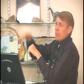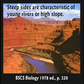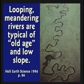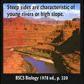Steep sides indicate the river is probably very young or on high sloping ground. Characteristics of a low-gradient stream: it loops back and forth. Characteristics of a high-gradient stream: steep sides on the river. Grand Canyon has both loops and steep sides. They can't figure out how it formed because they're assuming the river made it — and the river didn't make it. The flood made it.